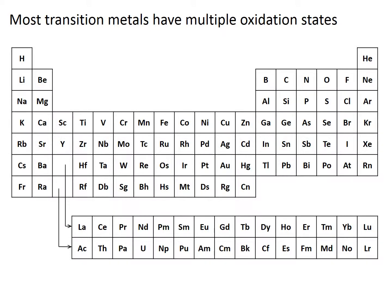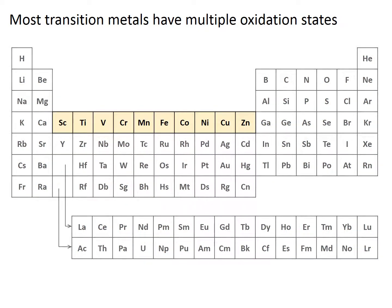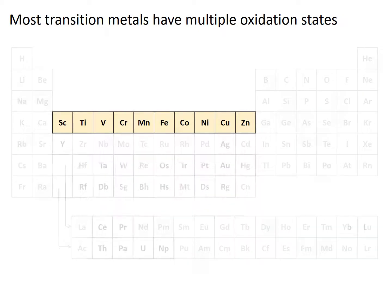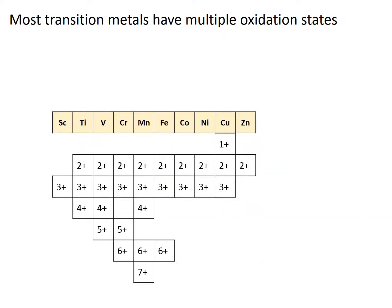Most transition metals can exist in multiple oxidation states. If we look at the first row transition metals alone, we can see the many oxidation states that they can adopt. The oxidation state of a transition metal is very important in determining its structure and function.